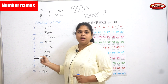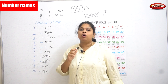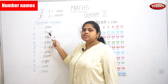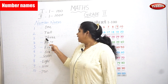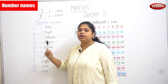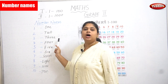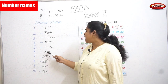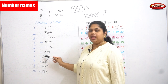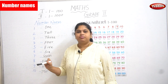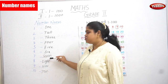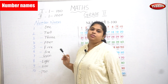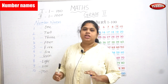Now we all have the number names. Shall you tell along with me one time? Yes. 1: O-N-E. 2: T-W-O. 3: T-H-R-E-E. 4: F-O-U-R. 5: F-I-V-E. 6: S-I-X. 7: S-E-V-E-N. 8: E-I-G-H-T. 9: N-I-N-E. 10: T-E-N. Okay. So up to 1 to 10, we have seen the number names.